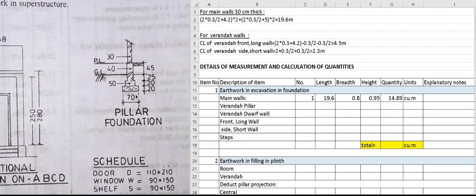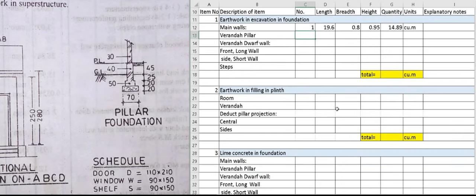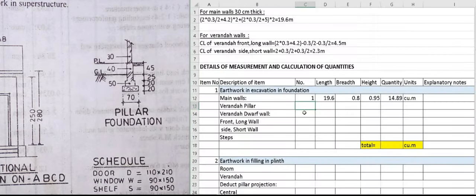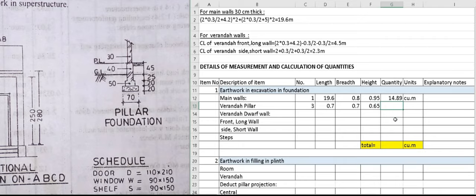For the veranda pillar section, we have three veranda pillars which are square in shape, 0.7 by 0.7 meter. The height of excavation is 0.2 plus 0.2 plus 0.25 equals 0.65 meter. The total quantity is 0.96 cubic meter.